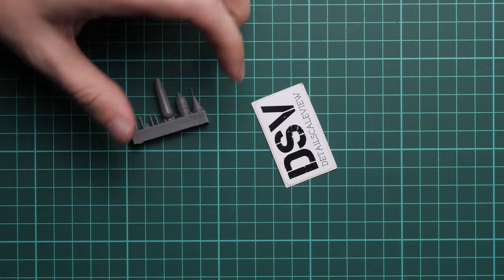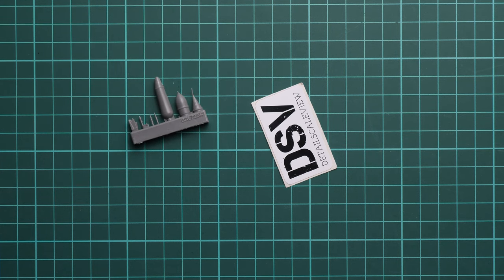Next, in a separate plastic bag we have a PE fret with a small film. This one will be used to tackle the interior features and also some minor external features.